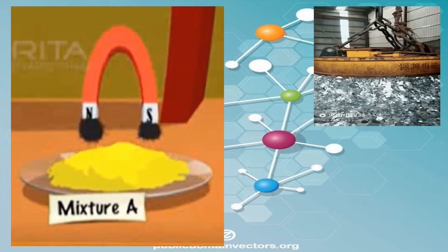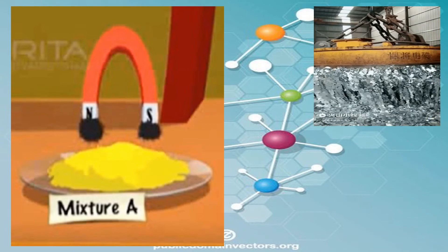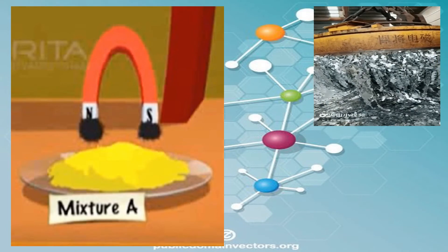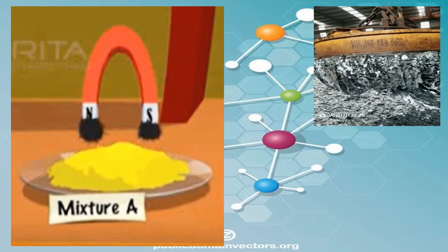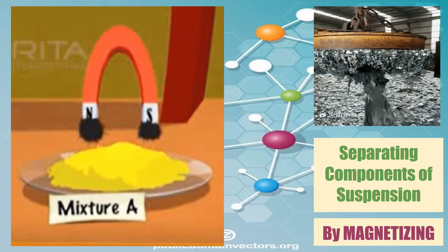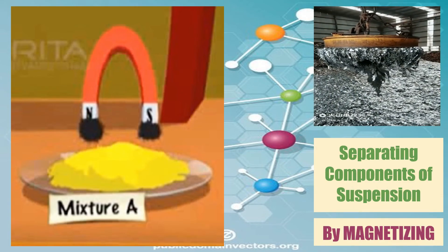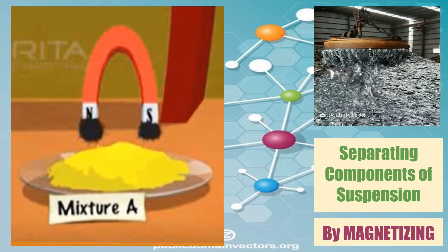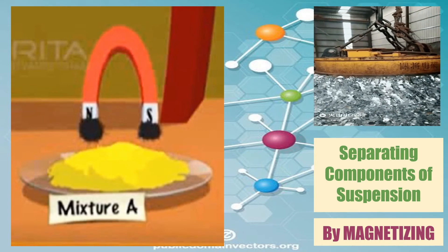In our previous experiment, we were able to recover the iron filings from the mixture of sulfur and iron. This is by the use of magnet. Magnetizing is very helpful especially if you want to recover elements which are metal from the mixture.